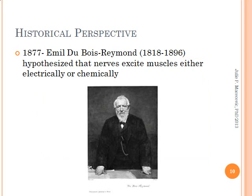In 1877, before the term synapse was even coined by Charles Sherrington, the German physiologist Emile Dubois-Reymond hypothesized that nerves excite muscles either electrically — the prevailing theory of the time — or chemically, a somewhat radical concept. His theory went mostly unnoticed, and when three decades later the idea that chemicals were involved in neural transmission reappeared, the British researchers responsible for the reemergence were unaware of Dubois-Reymond's work, or at least did not give him any credit.